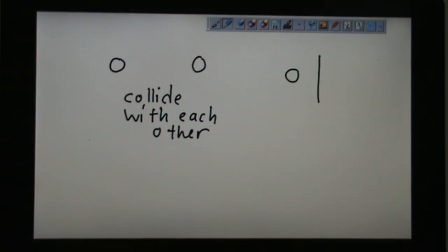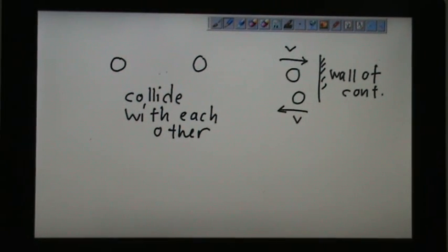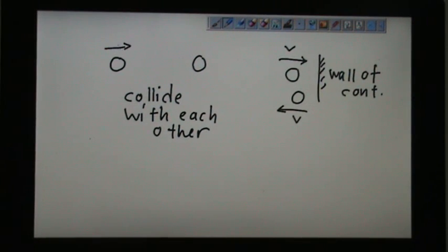Let's say this is the wall of the container. Wall of container. So this is a wall. When it moves with certain speed, it will bounce back with the same speed. Same goes here. If you move with V, and then it will move with V. When they bounce back, they will bounce with the same value of V.